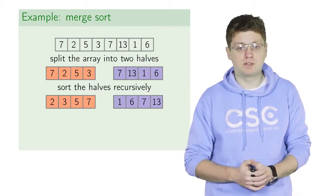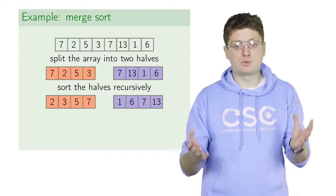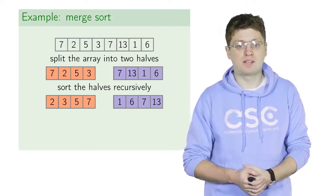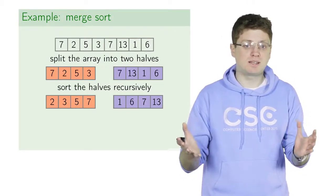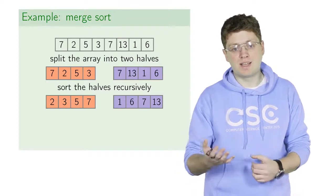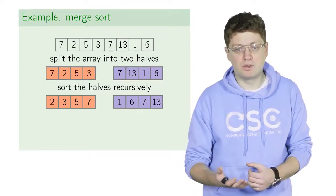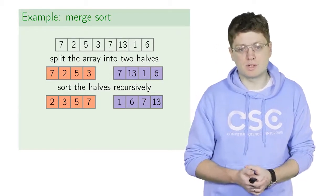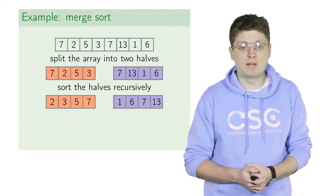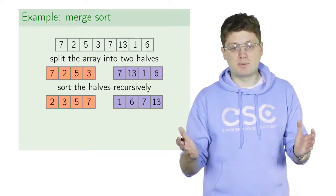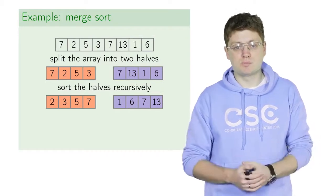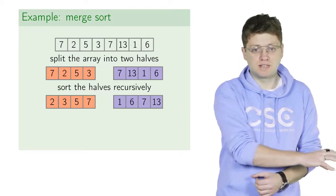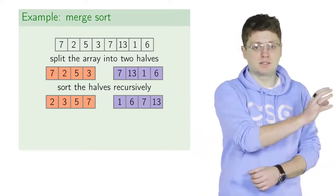These are the two resulting sorted arrays. Now what remains is to merge these two arrays of size 4 into one array of size 8. It is easy to find the minimal value in the resulting array: the minimum in the first array is 2 and the minimum in the second array is 1, so the minimum in the merged array must be 1. We take 1 from the right subarray, put it in the resulting array, and it is already in its right place.